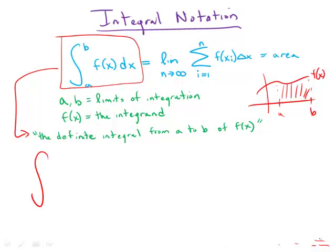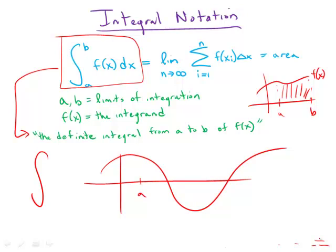And just to establish some basic ballpark rules: if we have a function that goes above the x-axis and below the x-axis—so suppose a is here and b is here—well, if we're finding the area, the way this is going to work is any area that is above the x-axis we're going to count as positive, but any area that is below the x-axis we're going to count as negative.